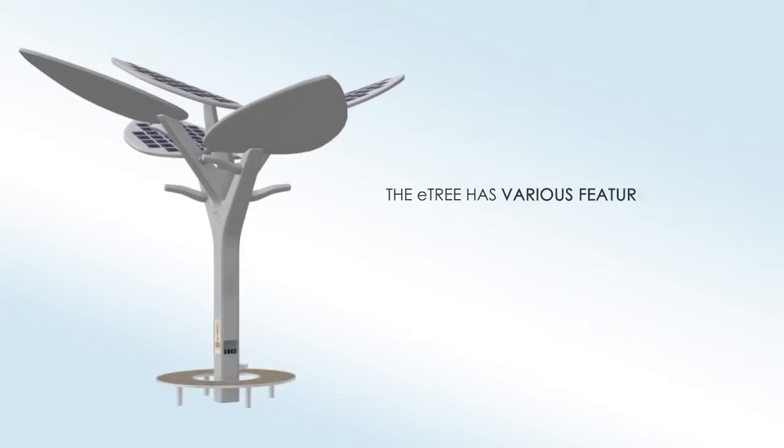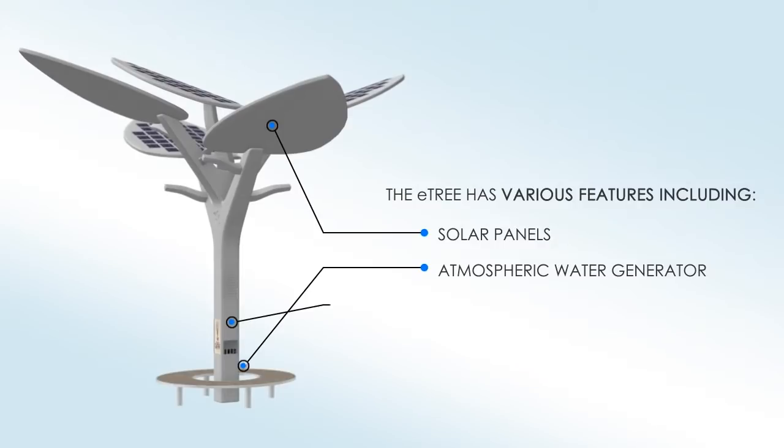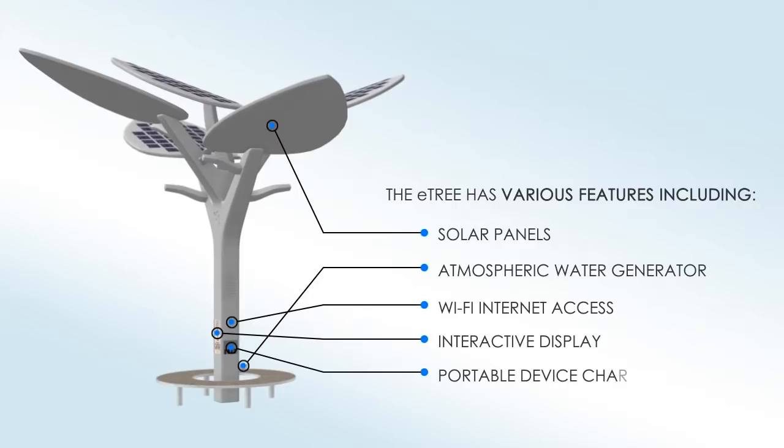The eTree has various features including solar panels, atmospheric water generator, WiFi internet access, interactive display, portable device charging station and recreation area.